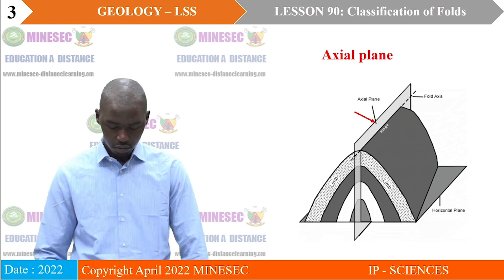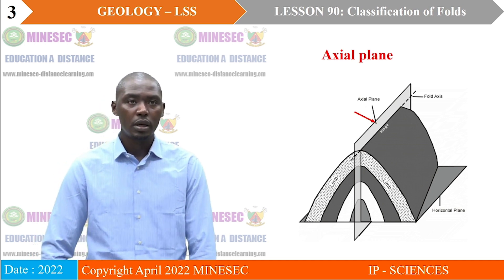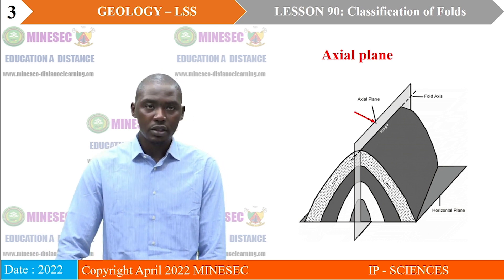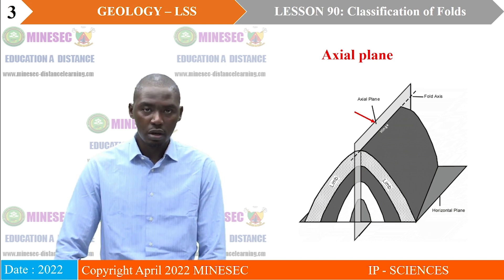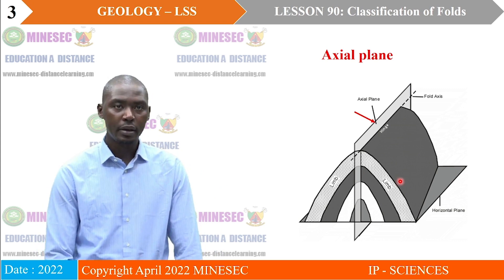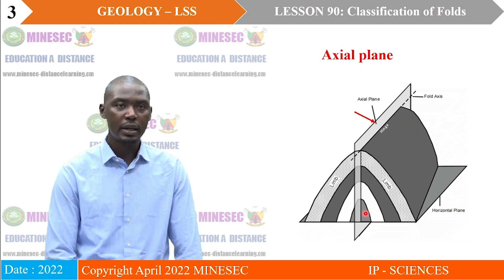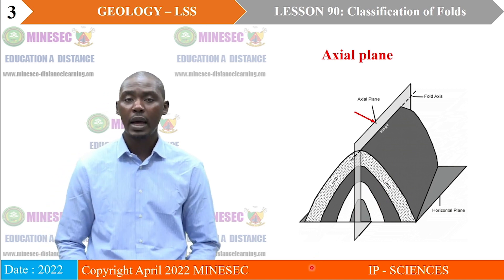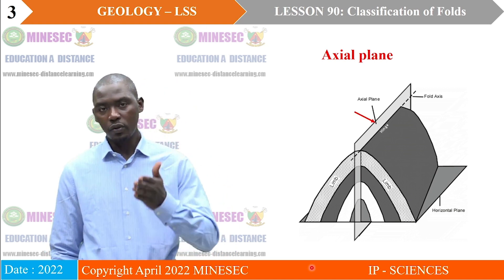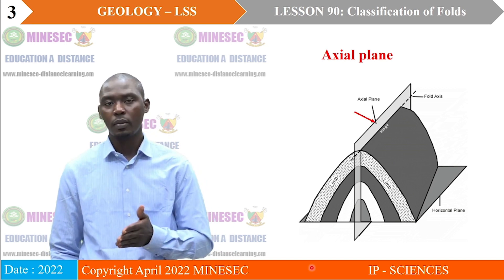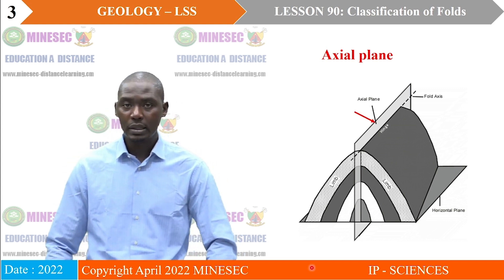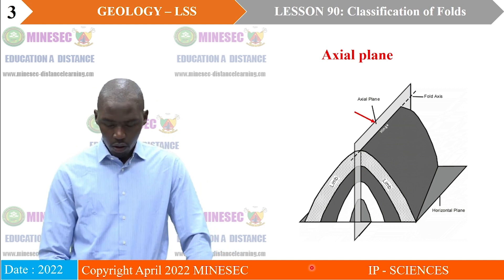By definition, the axial plane is a surface that carries the axial lines of successive folded layers within a fold. We have folded layers here, here, and here. All of these layers have their axial lines. A surface that successfully carries all the axial lines, or a plane that carries all the axial lines of those folded layers, constitutes an axial plane.